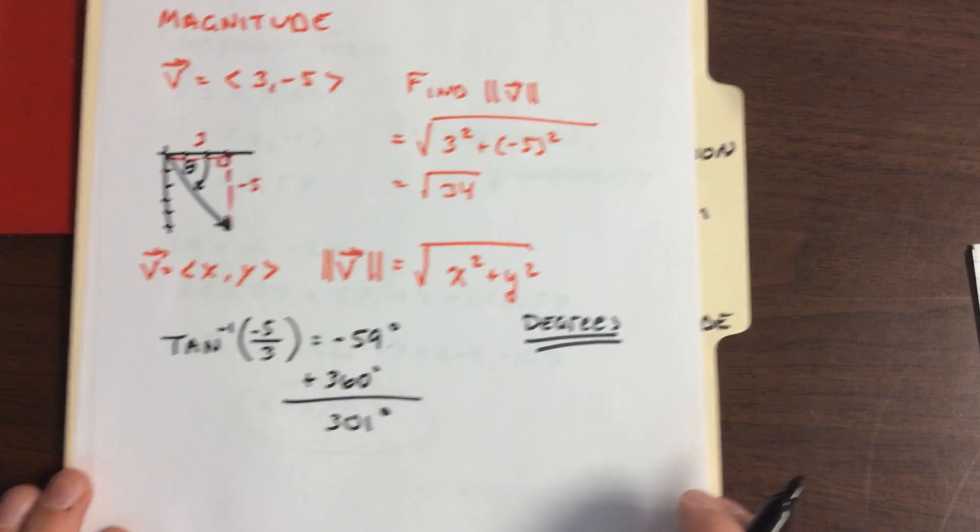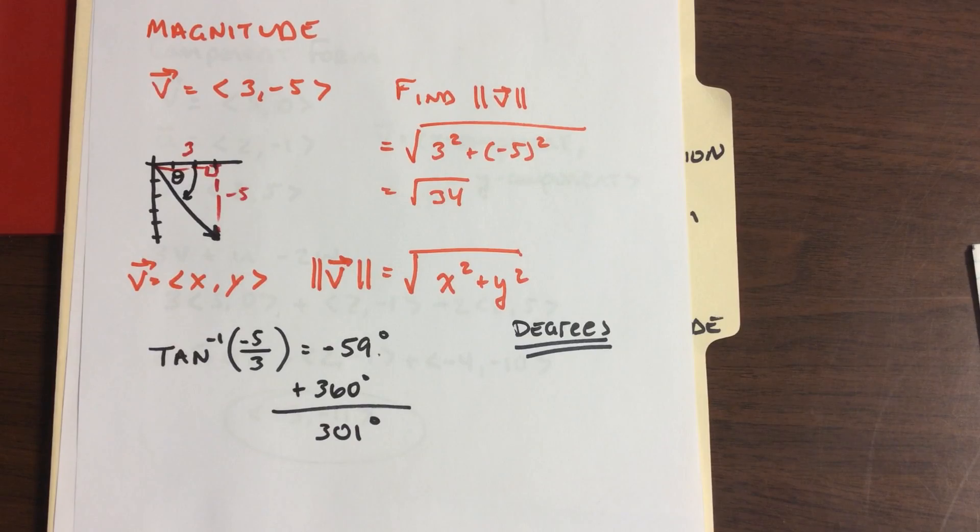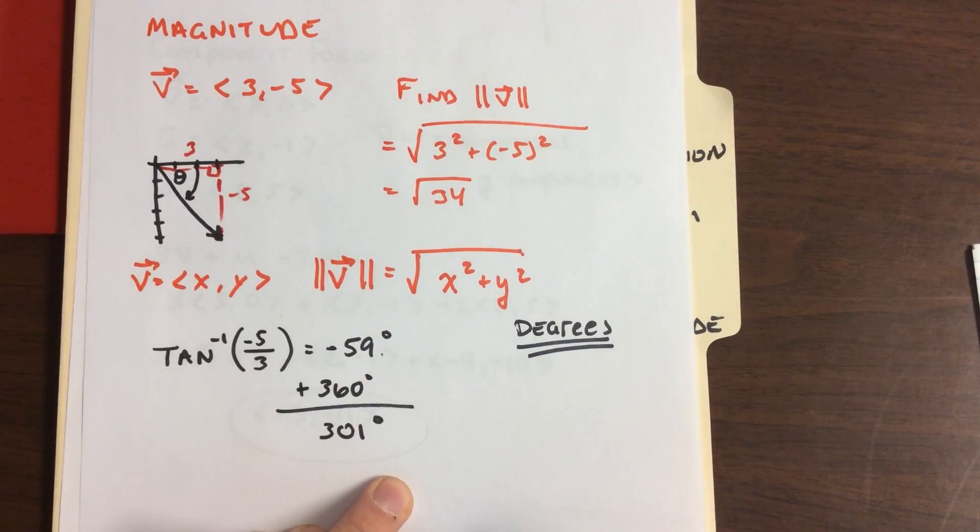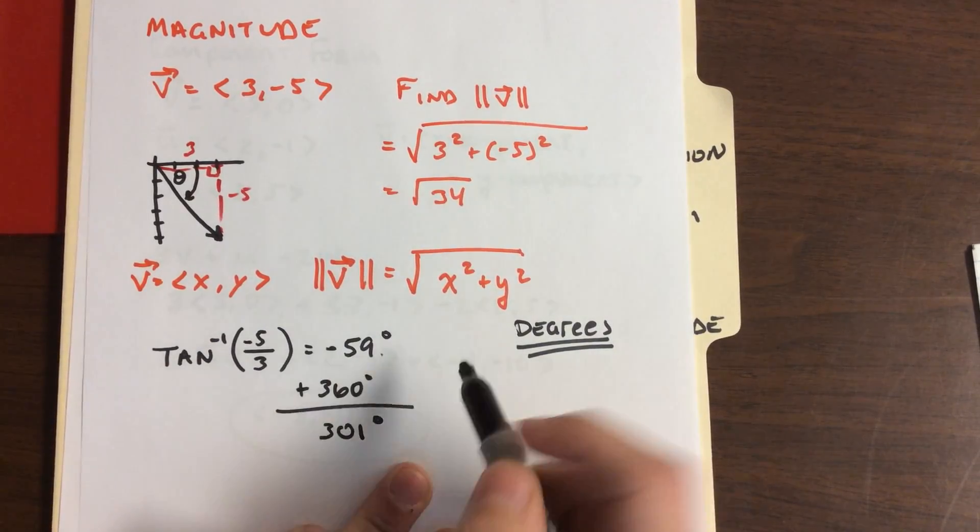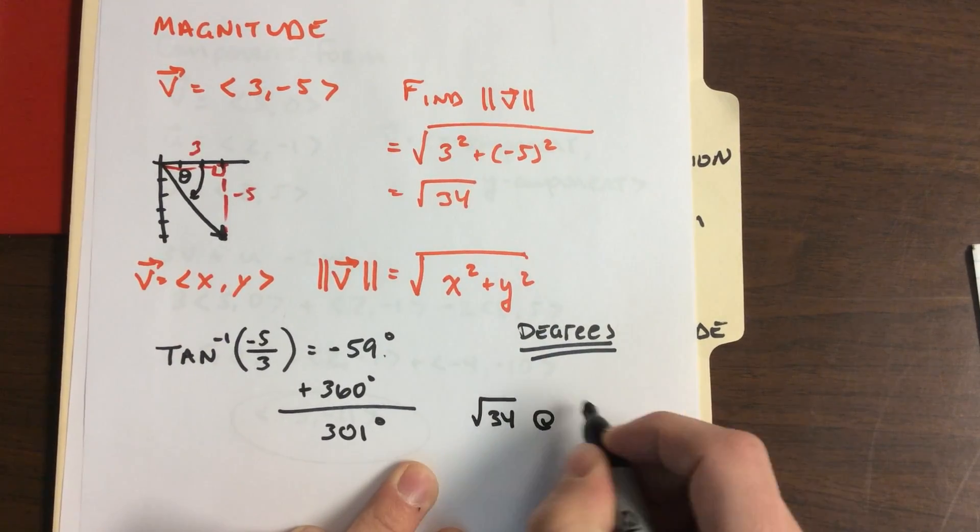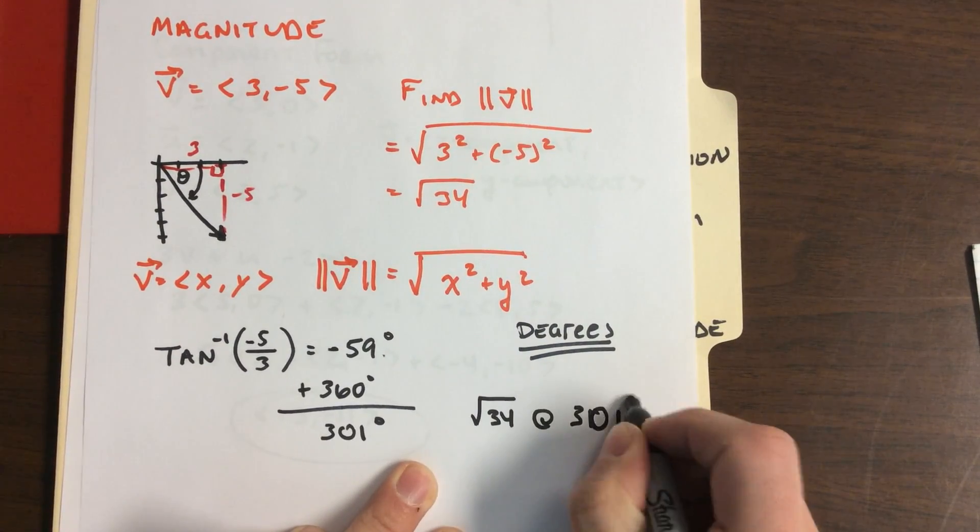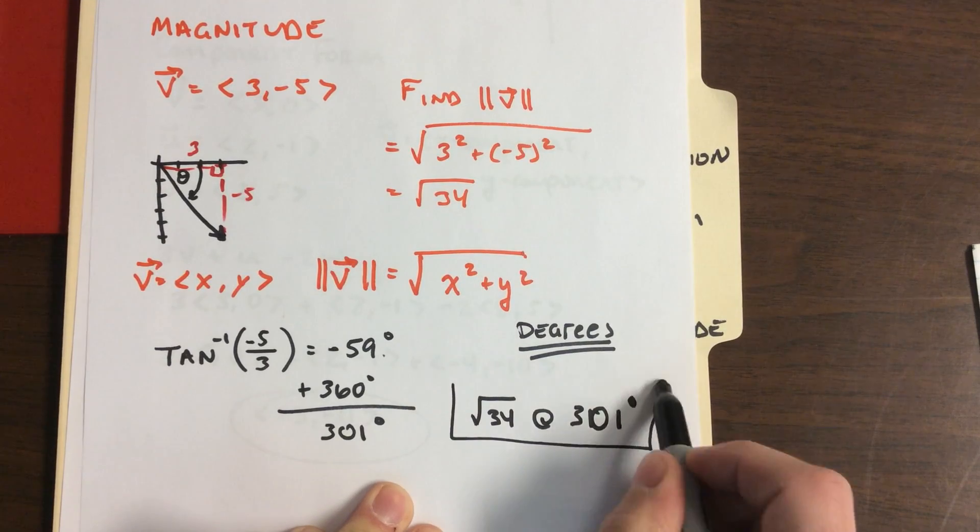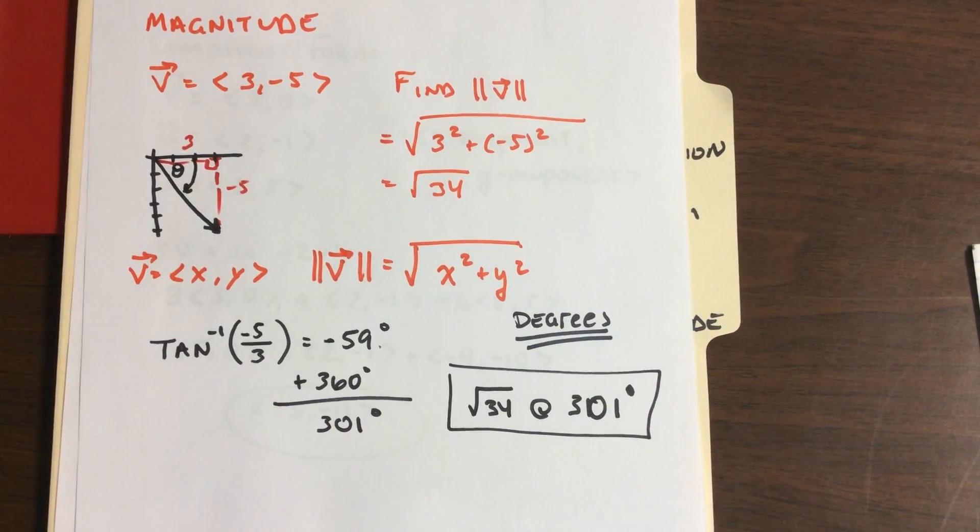We're in quadrant 4, so actually it's finding that negative angle. Remember, it's a clockwise rotation. We'll do 360 minus 59. If we add 360 here, we get an angle of 301 degrees.